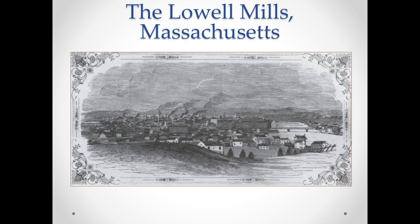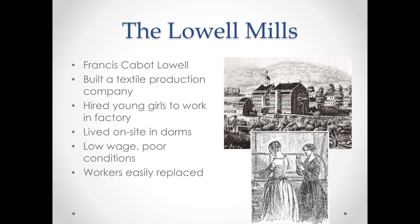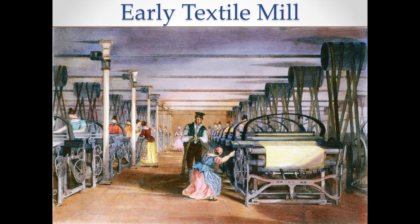One example is the Lowell Mills, a place where textiles were produced, started by Francis Cabot Lowell. He hired young girls from farms to work in his factory — they didn't have families to support, could live on-site in dorms, and then work. However, the mills had very poor conditions. Wages were very low because the reasoning was these workers didn't need the money to survive. The work conditions were also very dangerous — brand new mills with no safety guards, leaving machinery completely open.